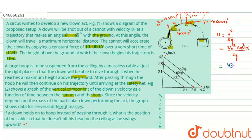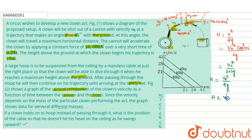Substituting v = v₀·cos45°, we get h = v₀²·cos²45° / 2g. Since cos45° = 1/√2, cos²45° = 1/2, giving h = v₀²/(2·2g) = v₀²/4g. This is the required cable position. If the cable height is less than v₀²/4g the clown will hit the ceiling; if it is greater than or equal to v₀²/4g he will safely avoid it.